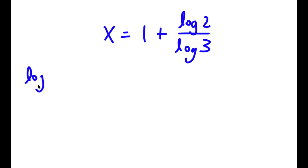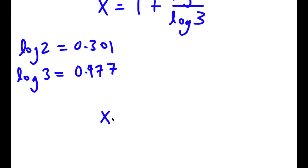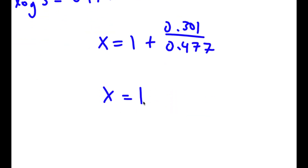Now, log 2 is equal to 0.301 and log 3 is equal to 0.477. So I have x is equal to 1 plus 0.301 over 0.477, which gives x is equal to 1 plus 0.631, which is equal to 1.631.